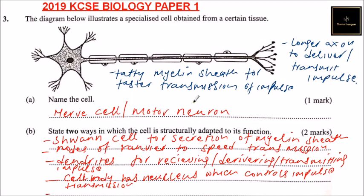Those are around six or seven points, but you only need two. If you write any two of these, you should be able to get the two marks. I've given you more than two so that if you only remember two, you'll be okay.